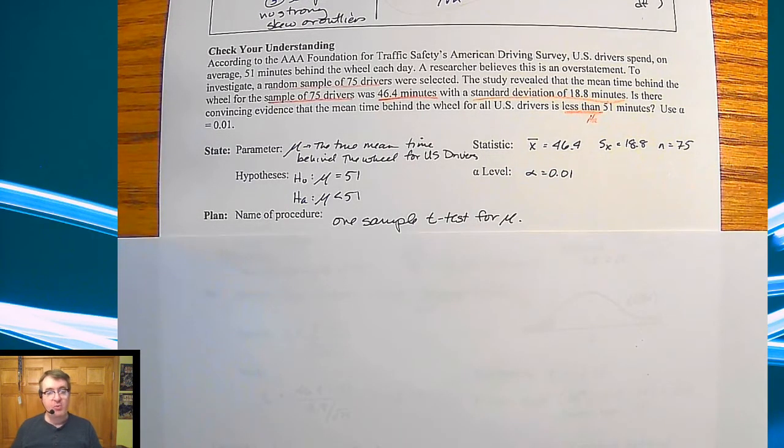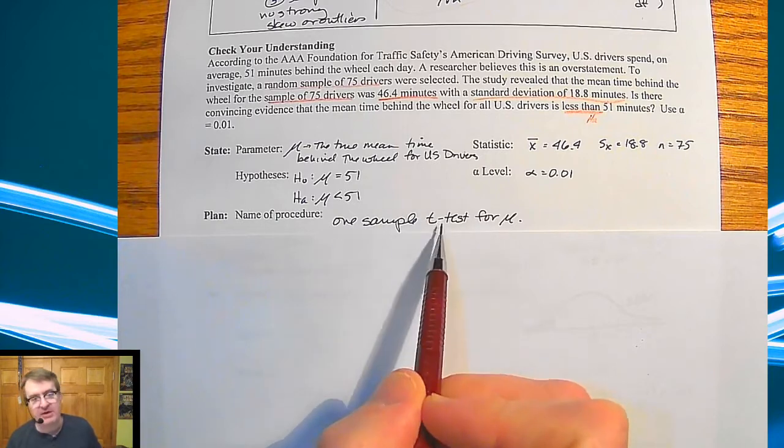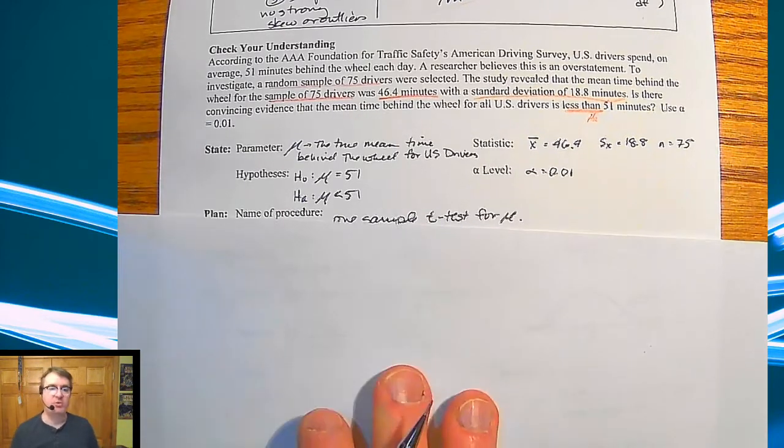Name of a procedure is going to be a one-sample t-test for means. And again, very similar naming structure to what we've been doing before, how many samples, what type of test, and then are you doing it for means or proportions?